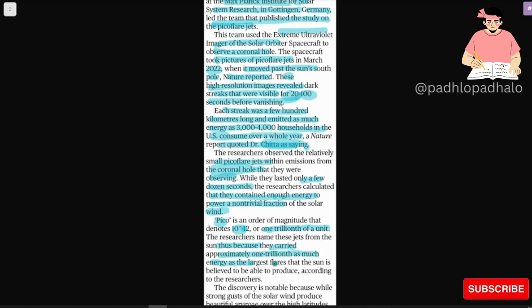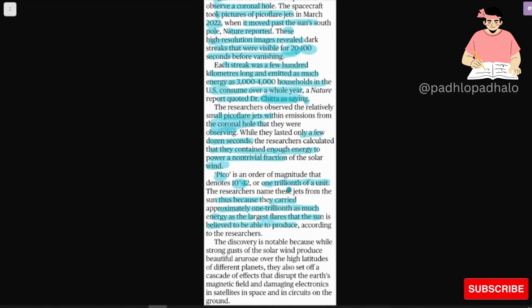The discovery is notable because while the strong gusts of solar wind produce beautiful aurora over the high altitudes of different planets, they also set off a cascade of effects that disrupts Earth's magnetic field and damages electronics in satellites in space and in circuits on the ground.